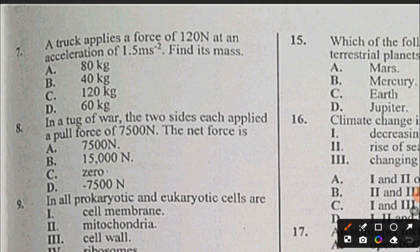Question 8: In a tug of war, the two sides each apply a force of 7500 newtons. Each side coming with 7500 newtons from this side, 7500 also pulling from the other side, so the net force will be zero.